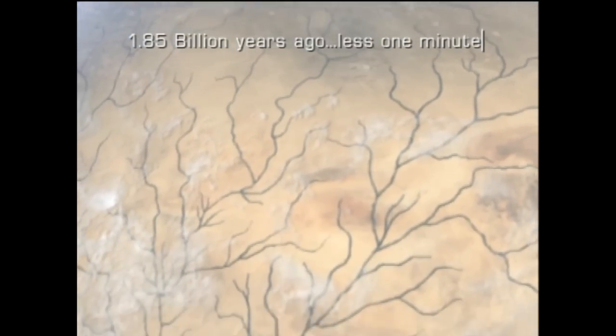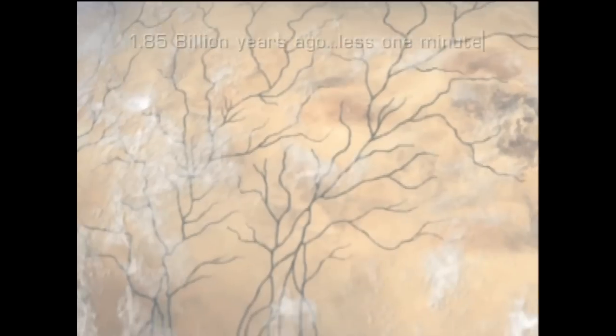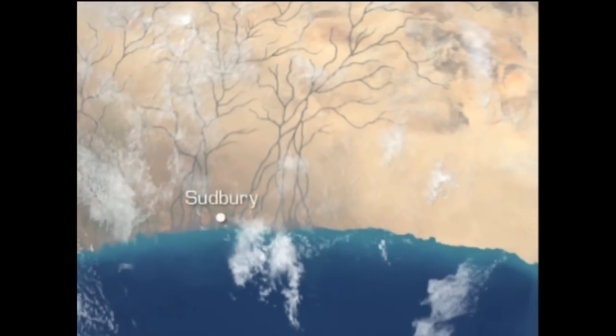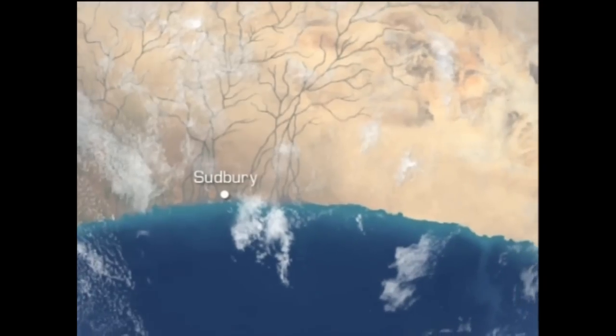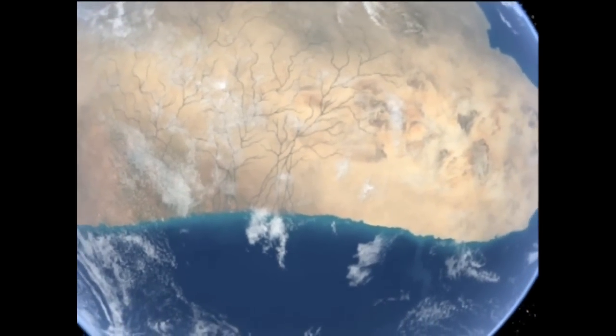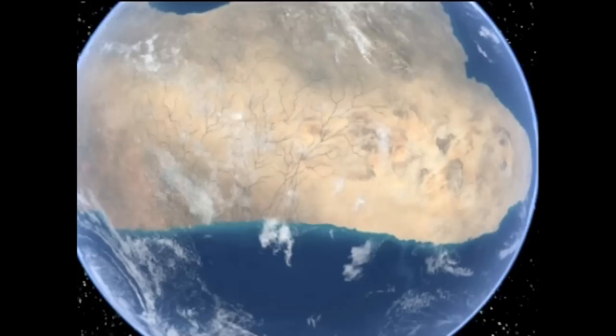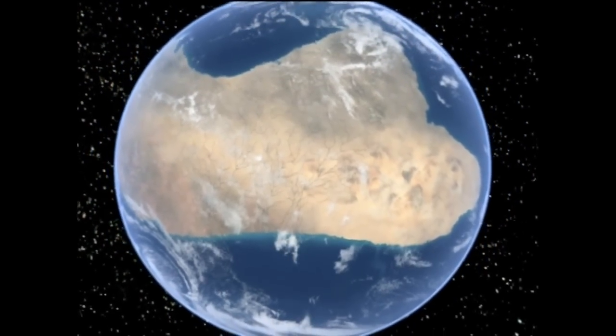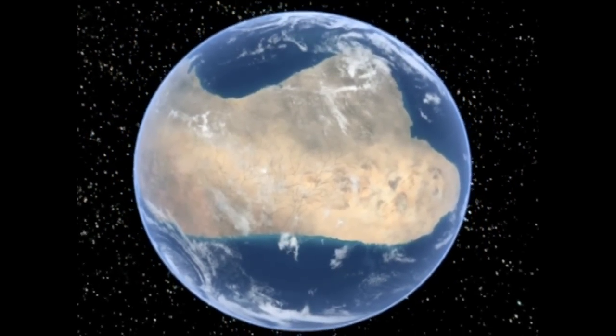1.85 billion years ago, there was no continent of North America. Sudbury was on the southern shores of an ancient continent we call Nina, 1,000 kilometers south of where it is today. Huge braided rivers crisscrossed the continent of Nina, carrying sediments to the shore that would eventually create the ancient sandstone found around Sudbury.